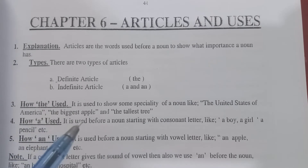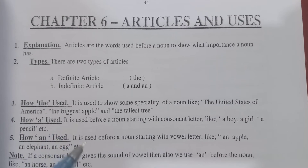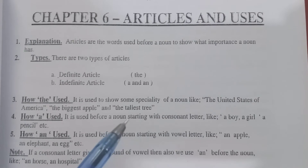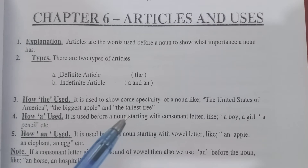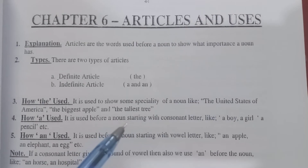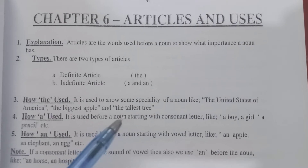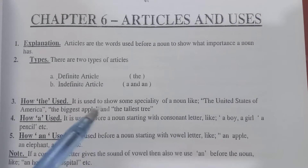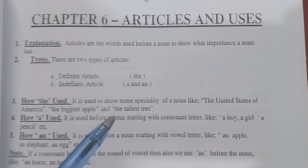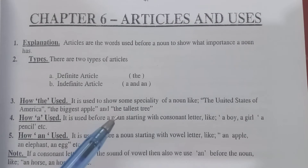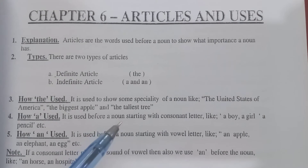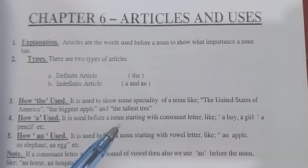'The biggest apple' — meaning the largest apple — it tells us about the superiority of a thing. And 'the tallest tree' means the tree which is the tallest. The tallest thing needs specification, so we use the word 'the.' We use 'the' with 'the United States,' 'the biggest apple,' and 'the tallest tree.'